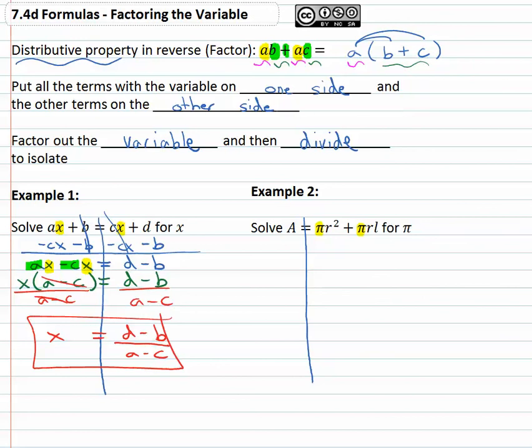We're ready to factor out the pi that they have in common, and whatever's left is going to fill the parentheses, r squared plus r l. R squared plus r l still equals A. We're solving for the pi to get the pi alone. We just divide by that parentheses the r squared plus r l, divide by r squared plus r l, and then we end up with pi is equal to A over r squared plus r l.